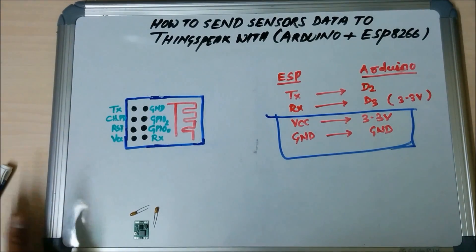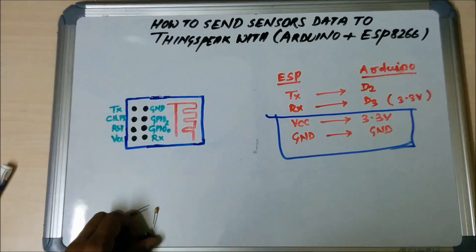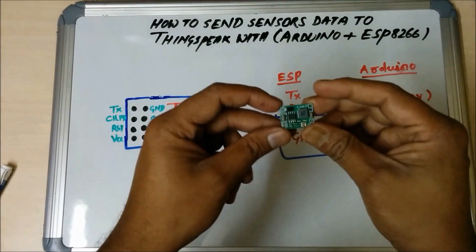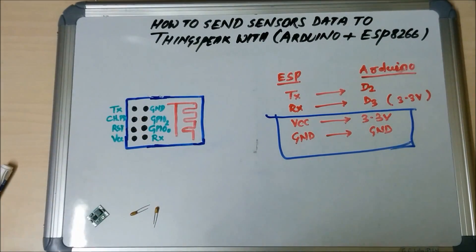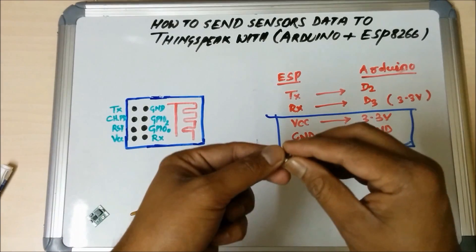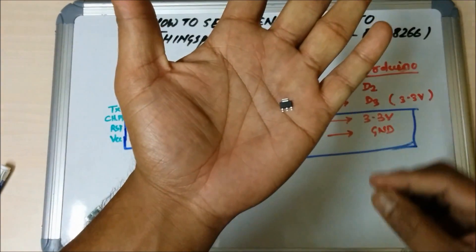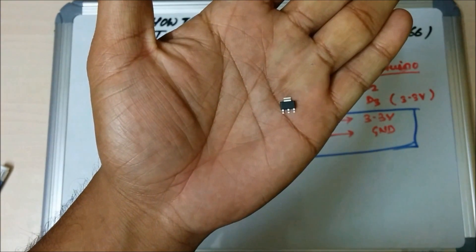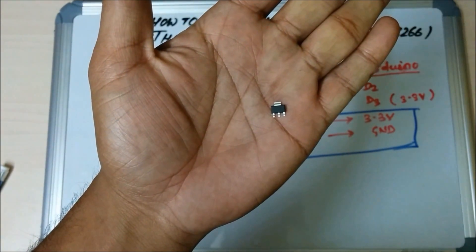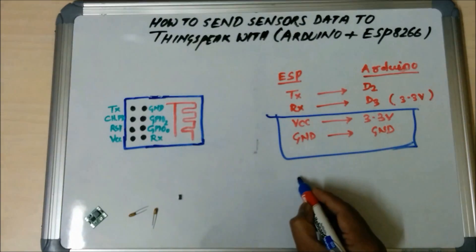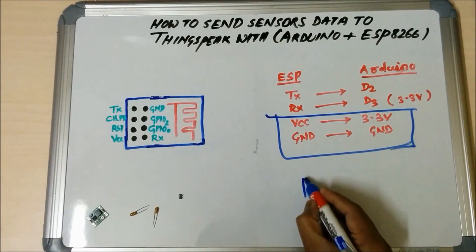You can design the power source by using a simple buck converter like this or you can design a power supply by using this linear voltage regulator. This is AMS1117. Let's see the schematic for this power supply.